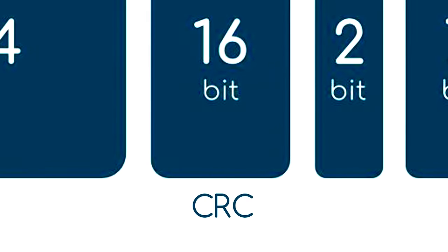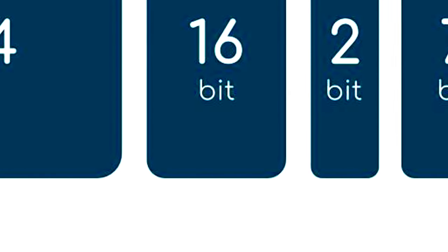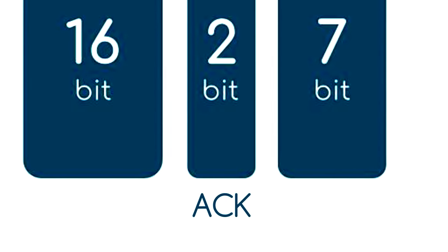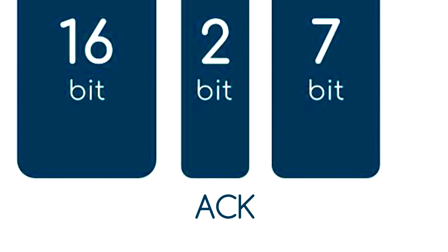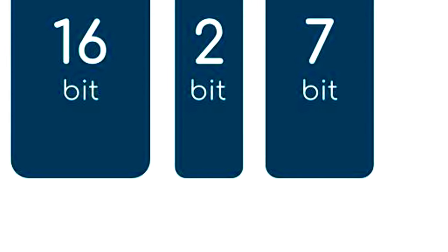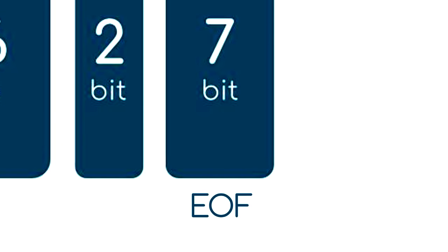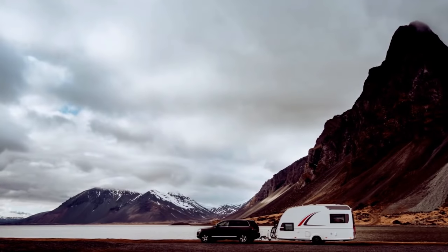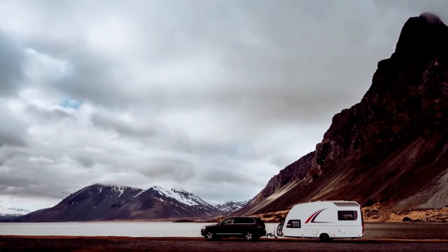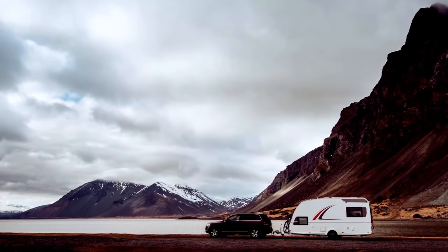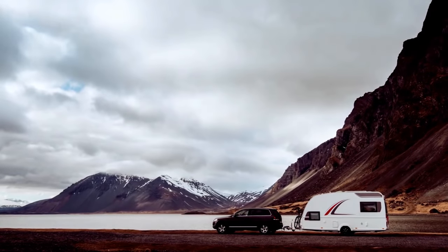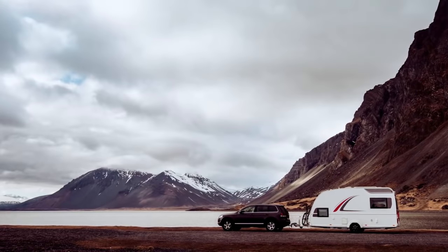CRC: the Cyclic Redundancy Check checks data integrity. ACK: the ACK slot indicates if the CRC process is OK. EOF marks the end of the CAN message. That's a lot, but only three are practically relevant in most data logging scenarios: the CAN ID, the Control, and the Data field. This is also why you typically only see these in CAN Bus data output.